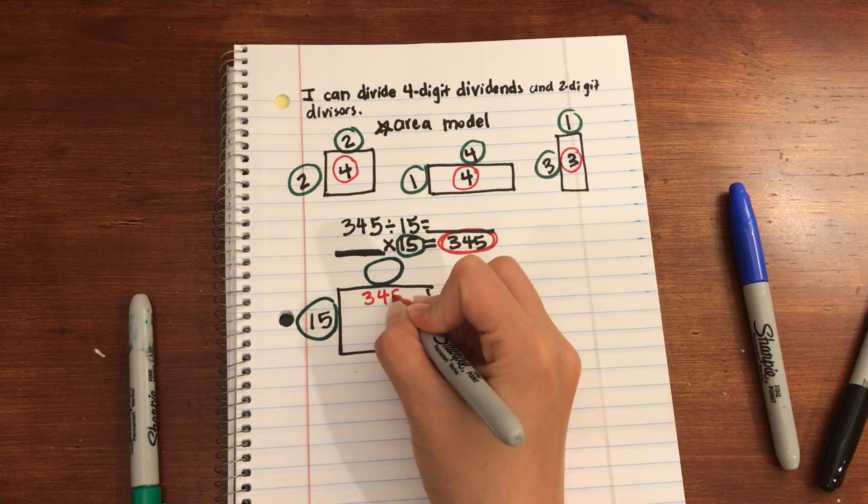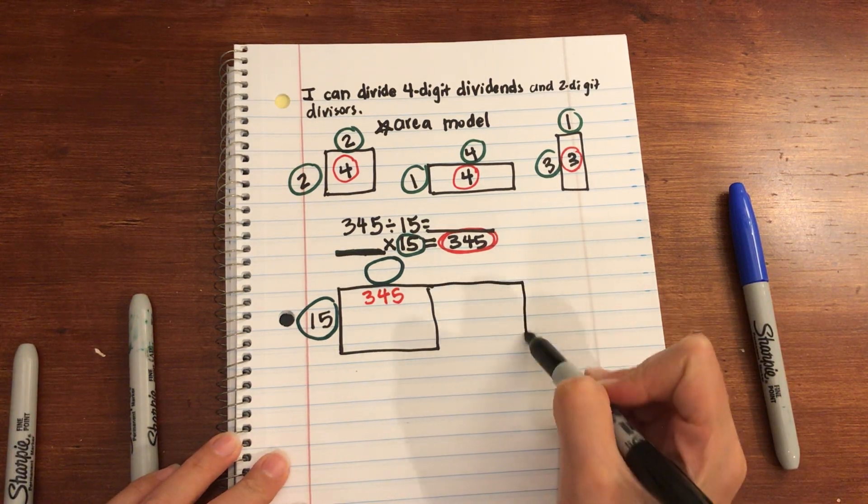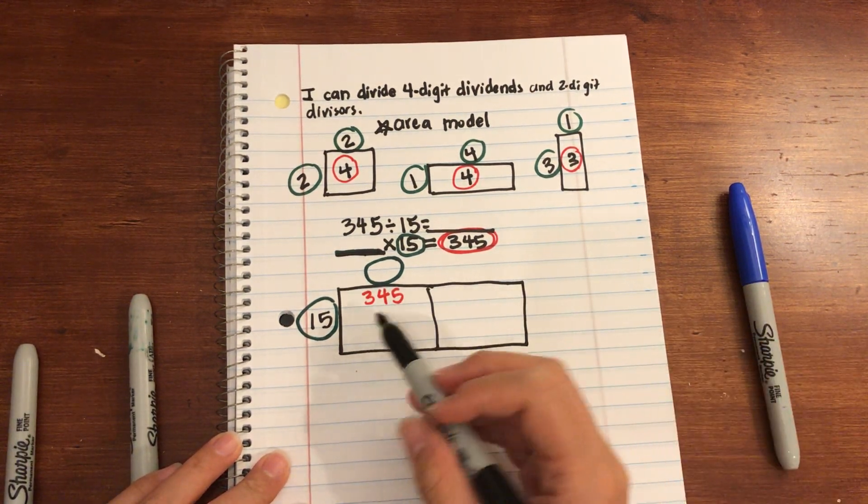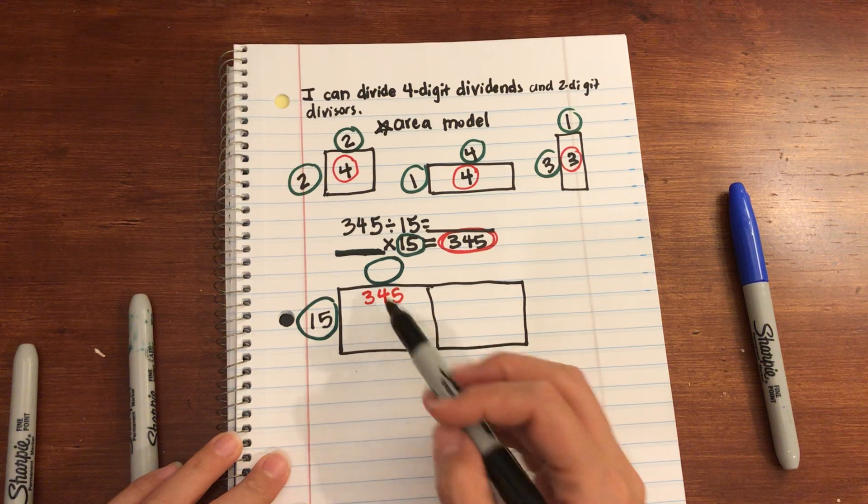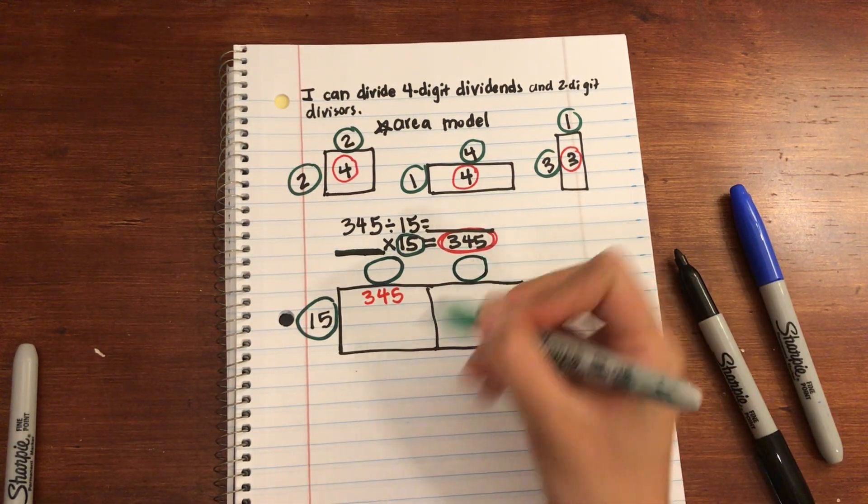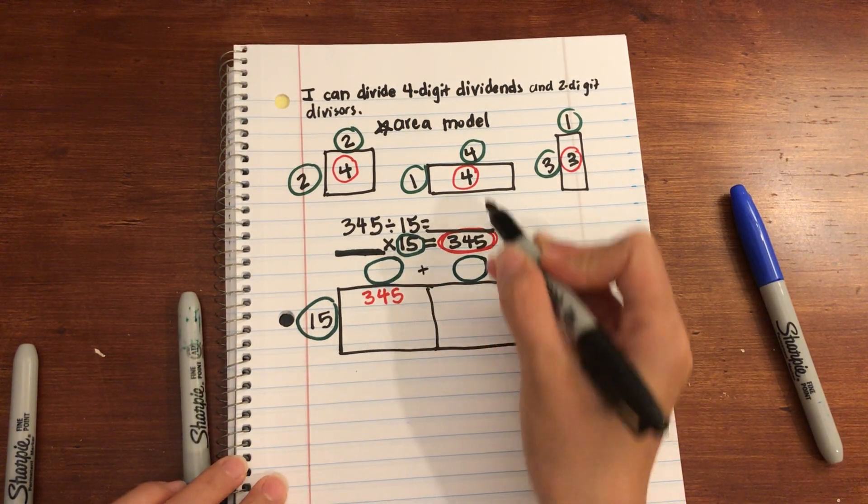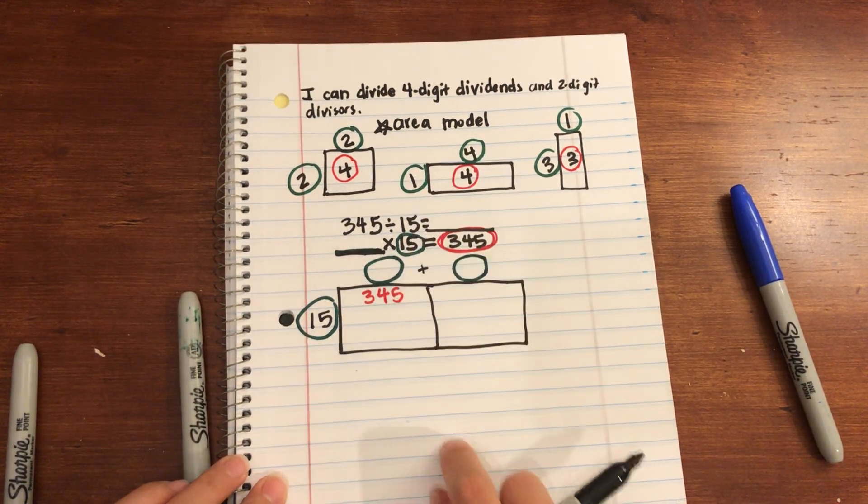So using the area model for division, you're going to find partial quotients. I don't know how many I'm going to have. Your other factor is not going to be multiple factors. It's actually multiple partial factors. You're going to add those together to get the final factor up top.